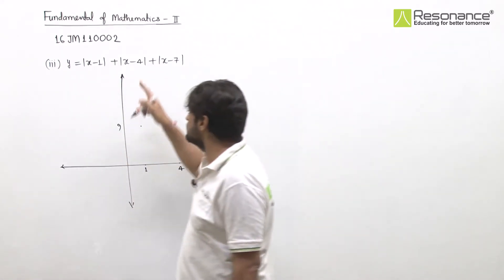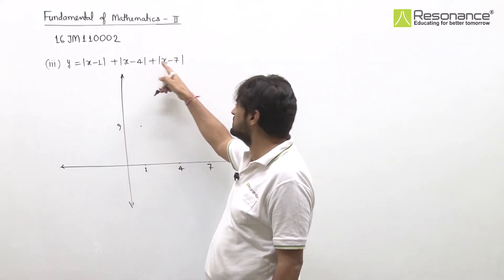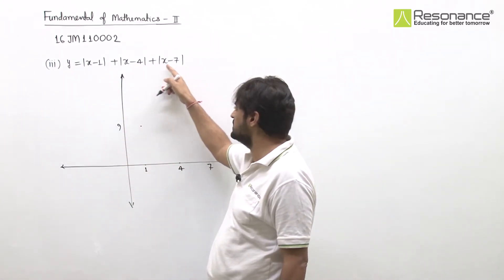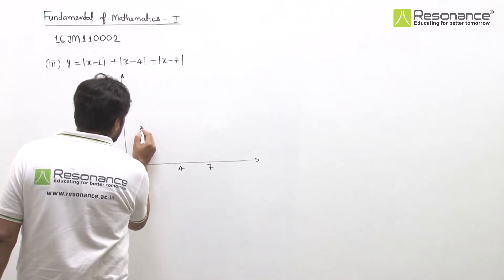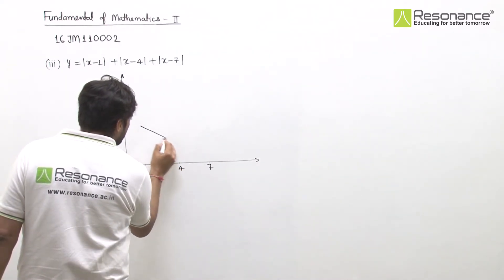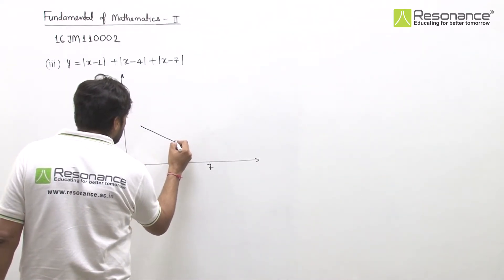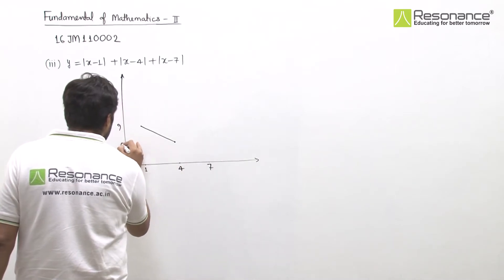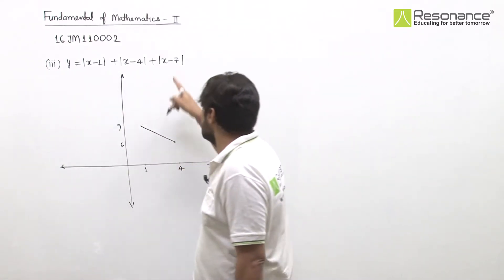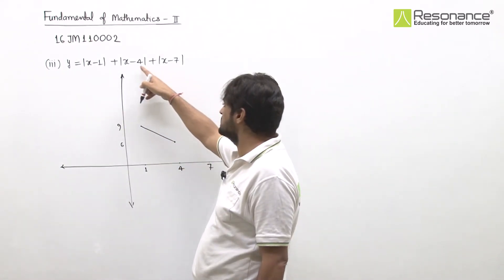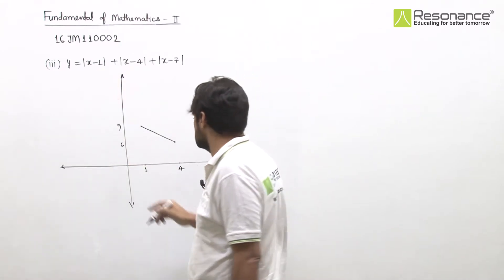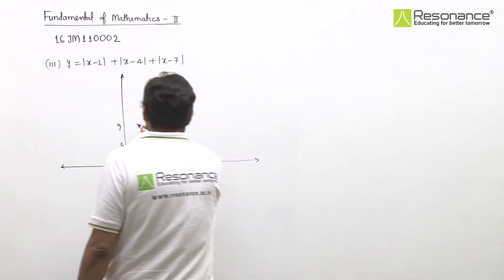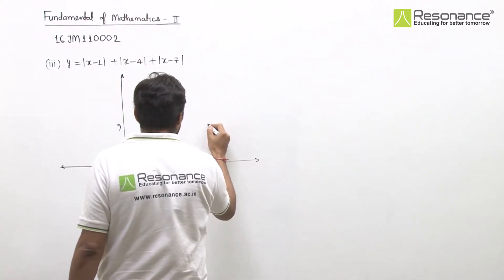At x = 4: first term gives 3, second term gives 0, third term gives 3 — total is 6. So value at x = 4 is 6. At x = 7: first term gives 6, second gives 3, third gives 0 — total is 9. So again at x = 7, value is 9.